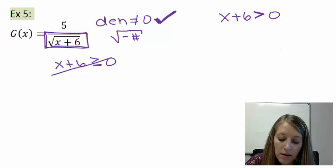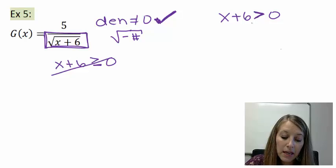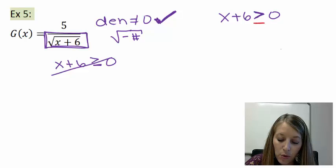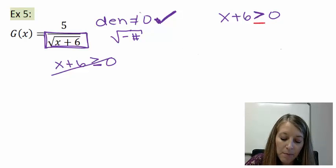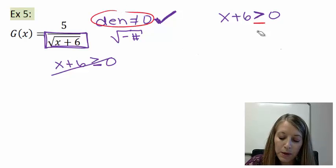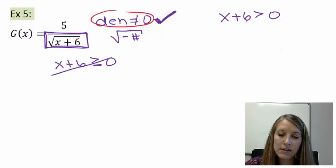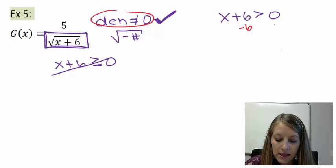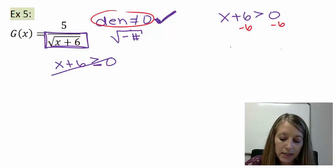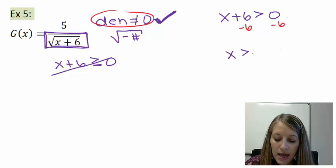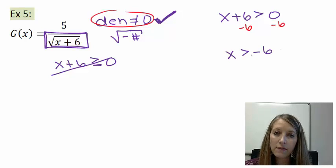And I do not put an or equal to bar here, because that means then my denominator would be equal to 0. So I just need to solve x plus 6 is greater than 0. If I isolate my x variable by subtracting 6 from both sides, I get x is larger than negative 6.